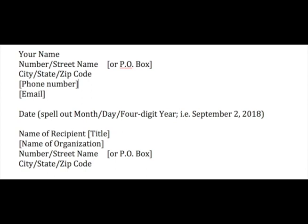Following the date, you're going to skip another line and then write the name and address of the person that you're sending this letter to. So you have the name of the recipient and his or her title, the name of the organization — unless you're sending it to a private person or sole proprietor where you might not necessarily include a company name — and again, the house number, the street name, or if the person has a PO box, include that, the city, state, and zip code.